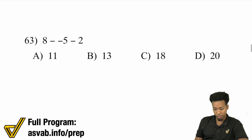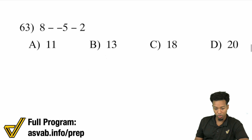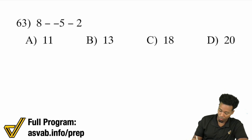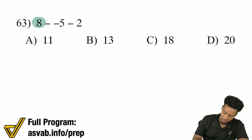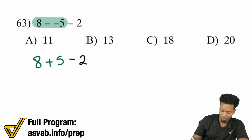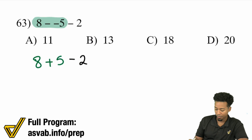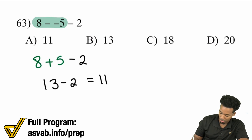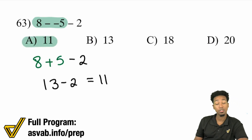Number 63: 8 minus negative 5 minus 2. Since we're subtracting all the way, I'll go from left to right. Remember that 8 minus negative 5 is the same thing as 8 plus 5, because minus a negative is the same thing as addition. 8 plus 5 gives us 13. 13 minus 2 is 11. A is the answer.